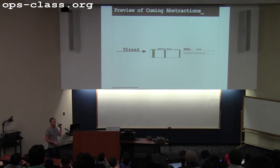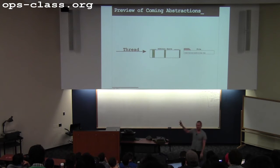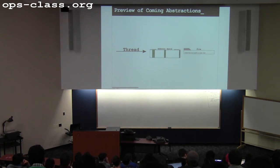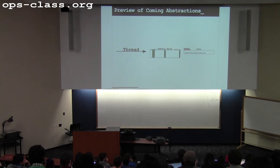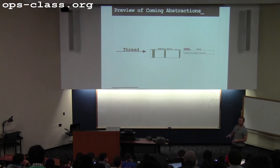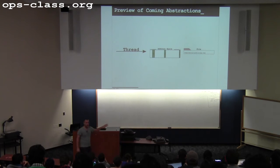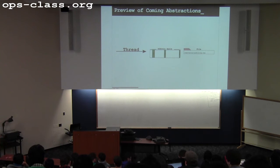Throughout the class, the three main units are really focused on three main abstractions: threads, which map down to a CPU or CPU core; address spaces, which map down to memory; and files, which map down to the disk. Those are essentially the three canonical components. There's a whole other semester's worth of material about networking abstractions, and you can take Dimitrios' course to learn all about them.